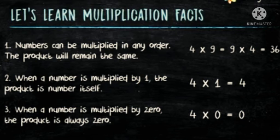Second, when a number is multiplied by 1, the product is the number itself. For example, 4 multiplied by 1 is equal to 4. Third, when a number is multiplied by 0, the product is always 0. For example, 4 multiplied by 0 is equal to 0.